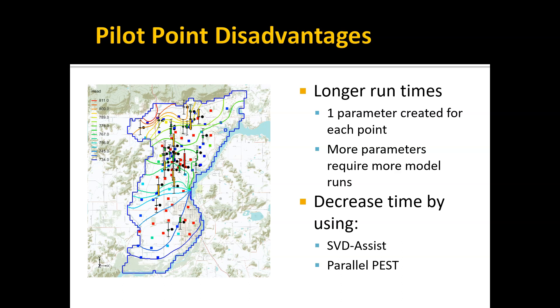However, you can decrease that run time using a couple things. There's something called SVD-Assist, which stands for Singular Value Decomposition. It basically groups your pilot points into super parameters. It's kind of like the multi-grid option we talked about for the MODFLOW solver. It's one way to handle a lot of pilot points.